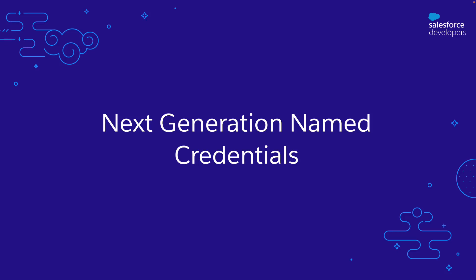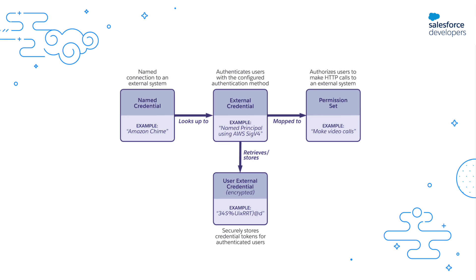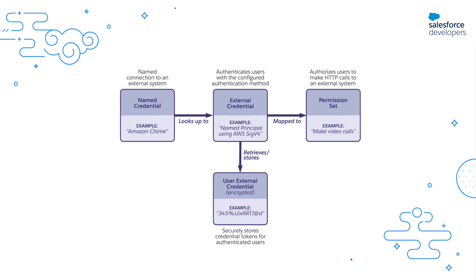We called them next-generation named credentials. The new architecture uses an updated object model. The authentication details are now stored in a new object called external credentials, which provides even more reusability. In addition, users now need permissions to make callouts using specific named credentials. In the Summer '23 release, we introduced two new features for next-generation named credentials.